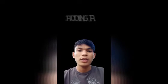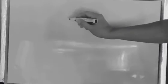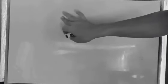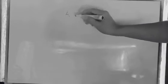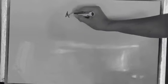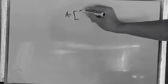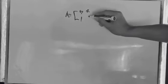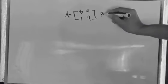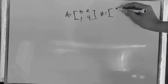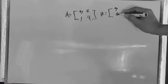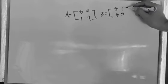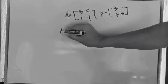Good day guys, welcome to my tutorial video. For this video we will be discussing adding and subtracting two by two matrices. For example, matrix A is equal to [3, 1, 2, 4] and matrix B is equal to [3, 3, 1, 5].